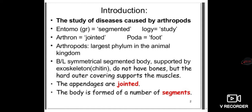Arthropods are the largest phylum in the animal kingdom. They have bilaterally symmetrical segmented bodies supported by an exoskeleton. They do not have bones, but a harder outer covering supports the muscles - these arthropods are muscle-based.